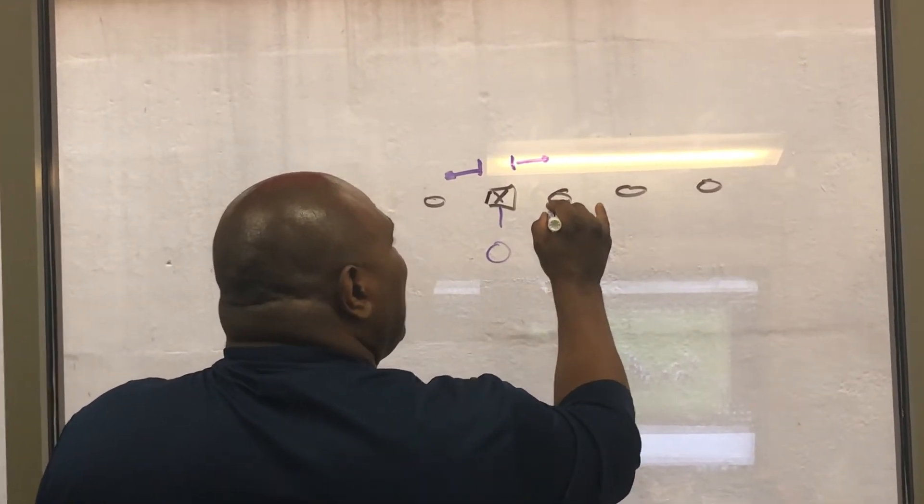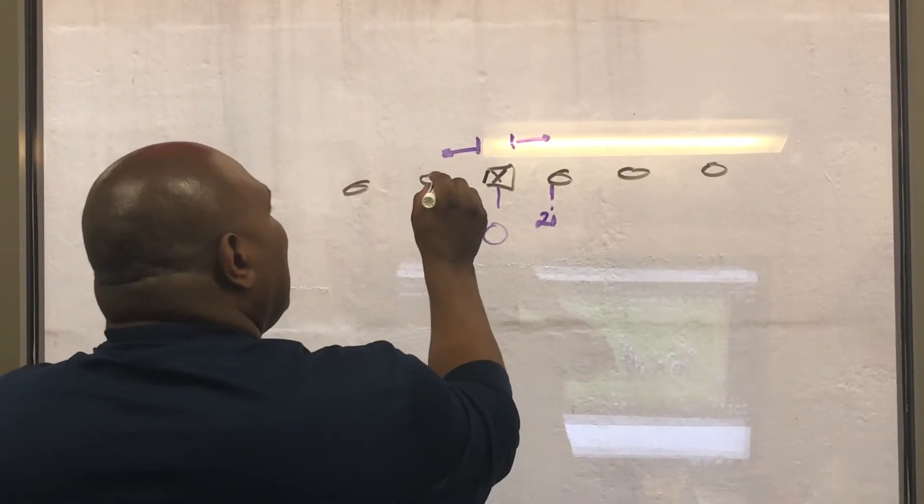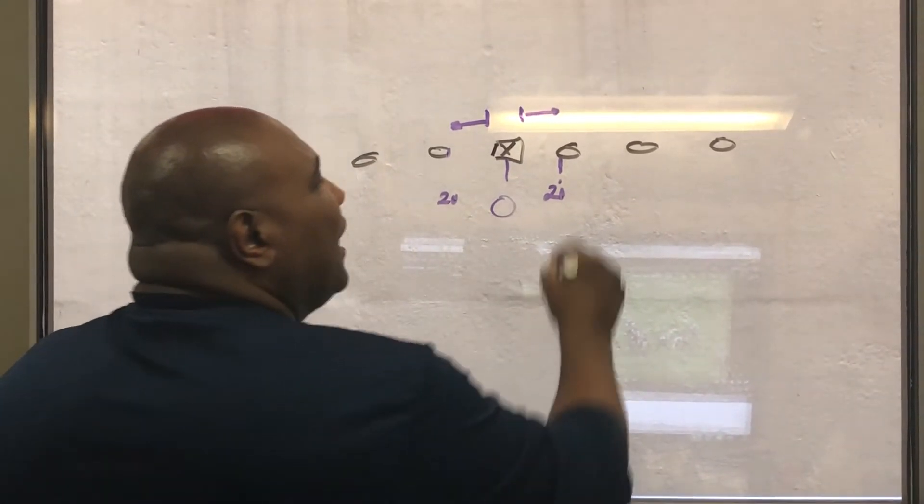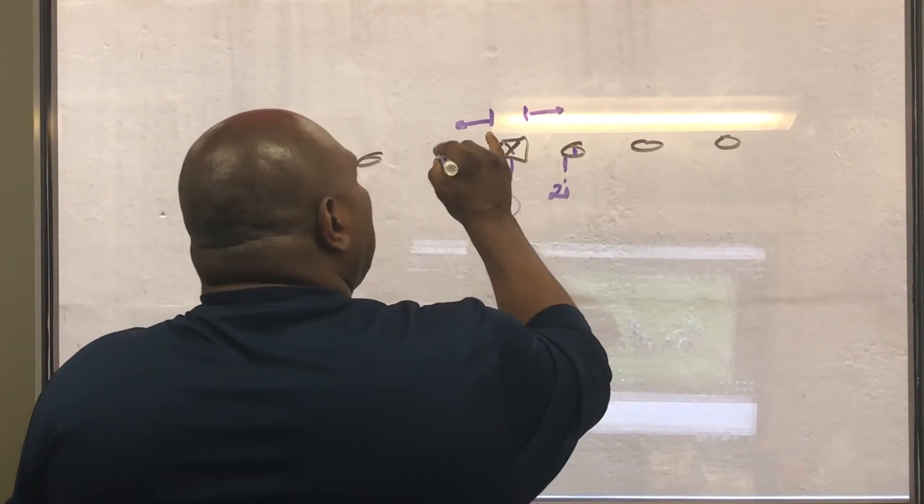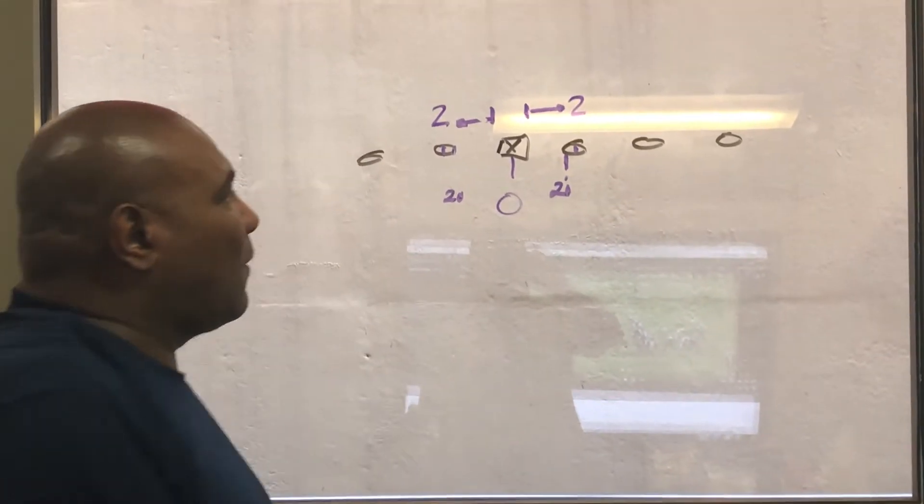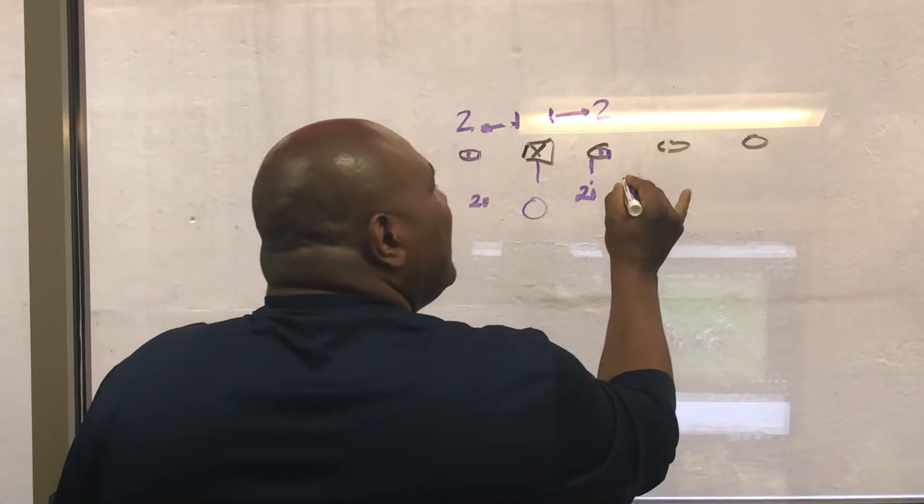Now, inside shade of the guard is what we call a two eye. Everything is mirrored. So that two eye is the inside shade of the guard. Head up on the guard is a two technique. Outside shade is a three technique.